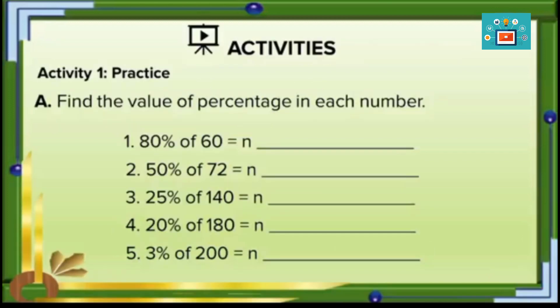Let's now proceed to Activity 1 — Practice. Find the value of the percentage in each number. Number 1: 80% of 60 equals n. Number 2: 50% of 72 equals n. Number 3: 25% of 140 equals n. Number 4: 20% of 180 equals n. Number 5: 3% of 200 equals n. You may use whichever method is easiest for you.